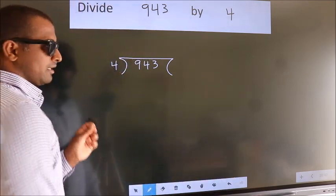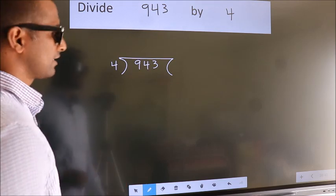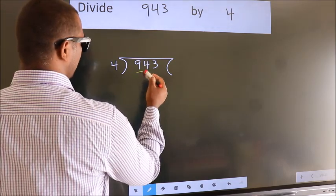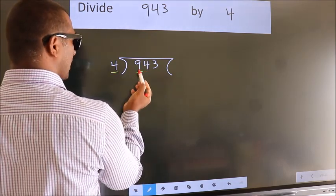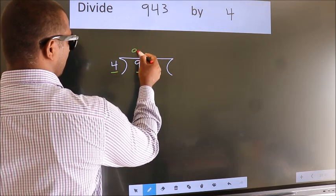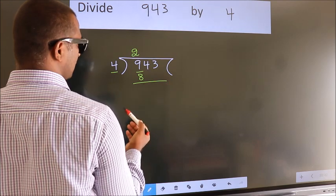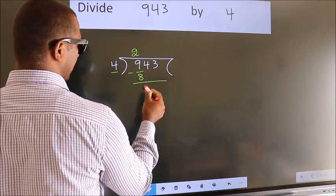This is your step 1. Here we have 9, here 4. A number close to 9 in the 4 table is 4 twos, 8. Now we should subtract. We get 1.